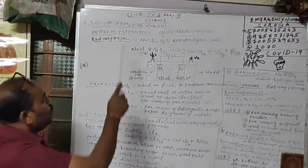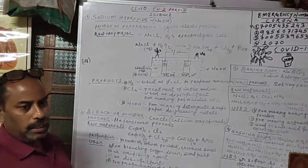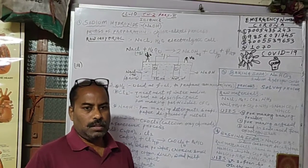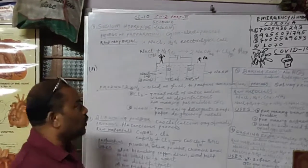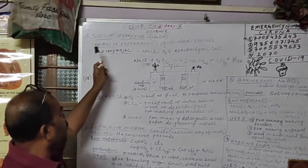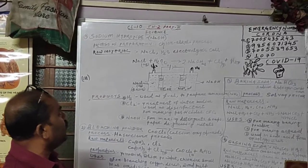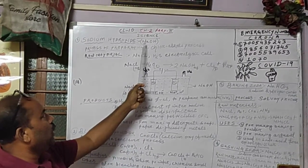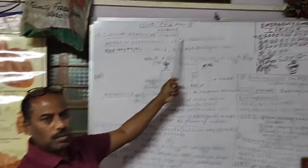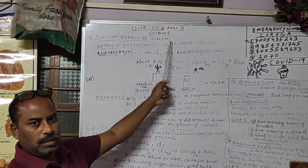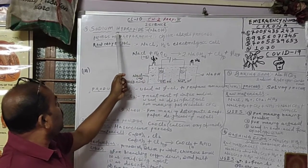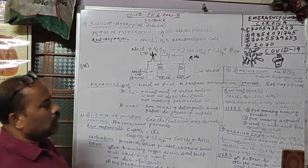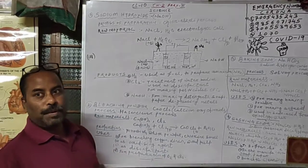First, sodium hydroxide. This is a basic salt. Its chemical formula is NaOH and its chemical name is also sodium hydroxide. Now let us see how it is prepared.